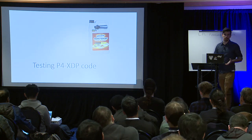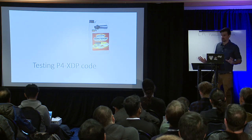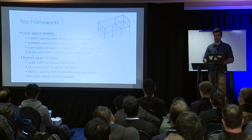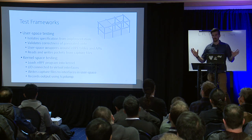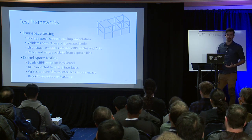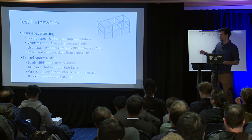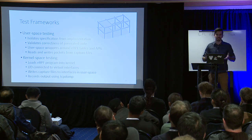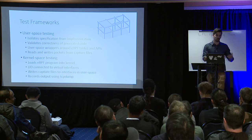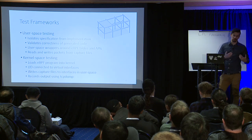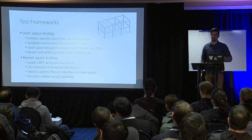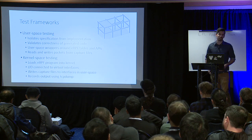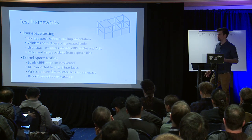We want to ensure the code we generate is correct, so we have a full end-to-end testing pipeline. We have two test frameworks: one completely in user space, and one in kernel space for end-to-end testing. We use user space to isolate the specification of our program and make sure the generated code is functionally correct and compiles nicely. It's basically a copy of all the kernel code with a user space wrapper providing all the eBPF tables and APIs, and you can use simple tools like GDB to step-by-step walk through your program.